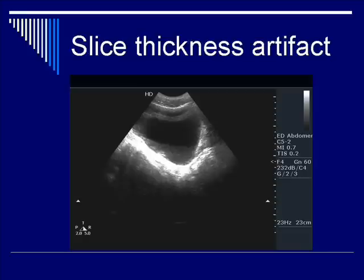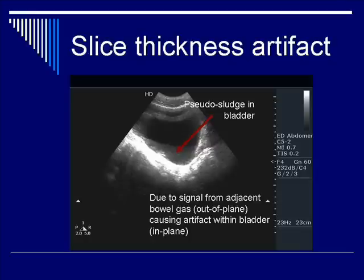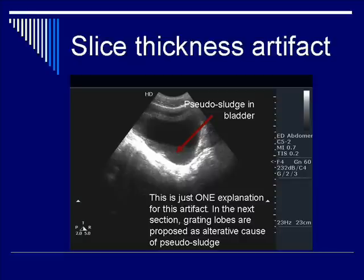Here is an example: a longitudinal scan of the bladder. You can see the hypoechoic reflectivity of the fascia plane surrounding the bladder, and you have this pseudo-sludge within the bladder. This is an artifact — there is actually no hypoechoic fluid within the bladder. This is all due to slice thickness, such that the hyperechogenicity from the fascia layers outside the bladder is contributing signals projected inside the bladder. An alternative explanation is grating lobes, which are also hypothesized to cause pseudo-sludge in the bladder.